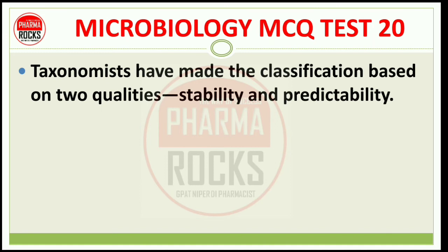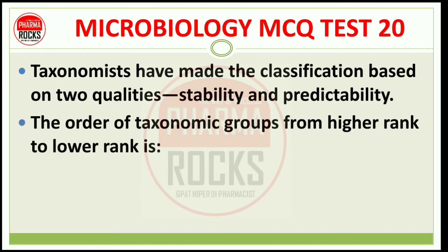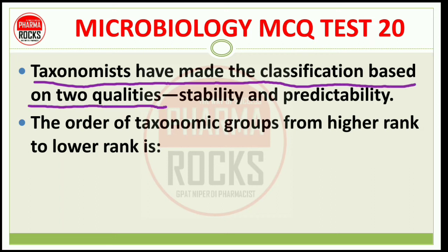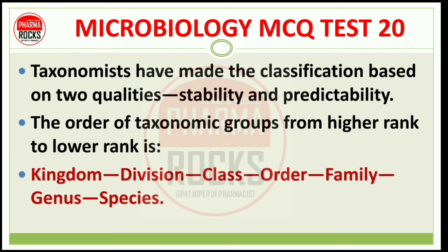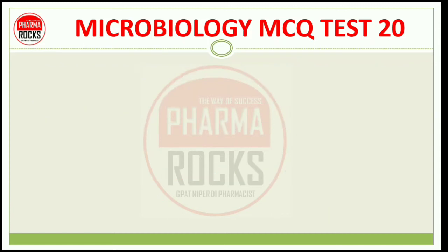The order of taxonomic groups from higher to lower rank is: Kingdom, Division, Class, Order, Family, Genus, and Species. यह खास आपको याद रखना है.